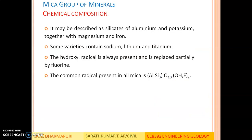Chemical composition: mica may be described as silicates of aluminum and potassium together with magnesium and iron. Some varieties contain sodium, lithium and titanium. The hydroxyl radical is always present and is replaced partially by fluorine, so the OH ion is always present in this group of minerals. The common radical present in all mica is AlSi3O10(OH)2, where OH may sometimes be replaced by fluorine.